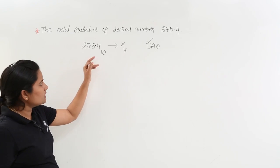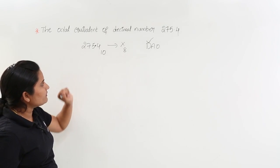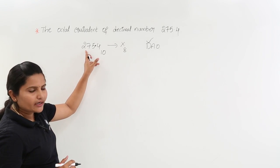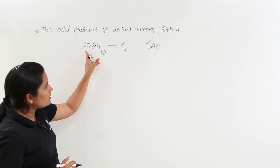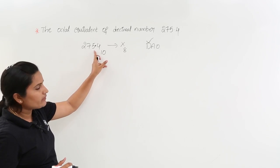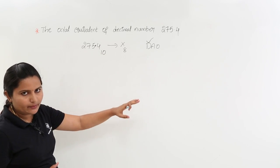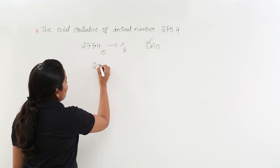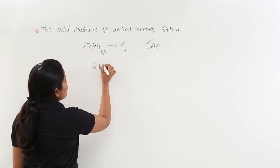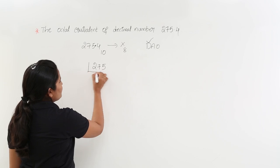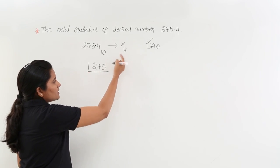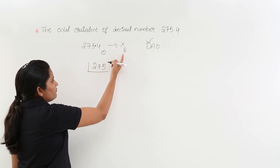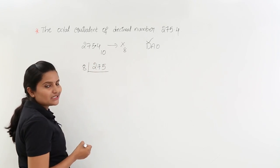Let me do that procedure. Here we have 275.4. We need to find the octal equivalent for 275 separately and 0.4 separately. To find the octal equivalent of 275, we use successive division of the number by the destination number system, which is 8.